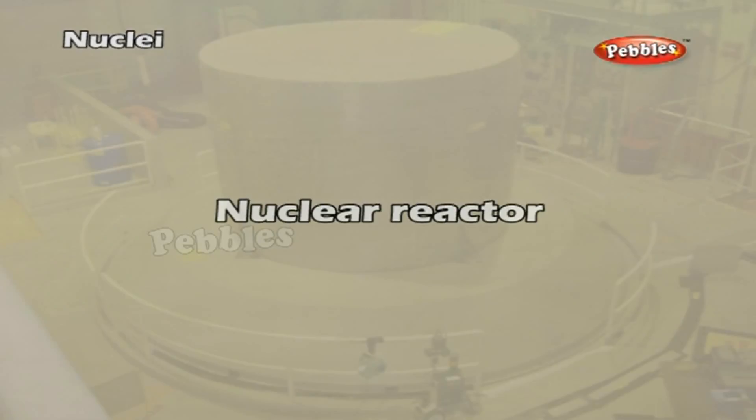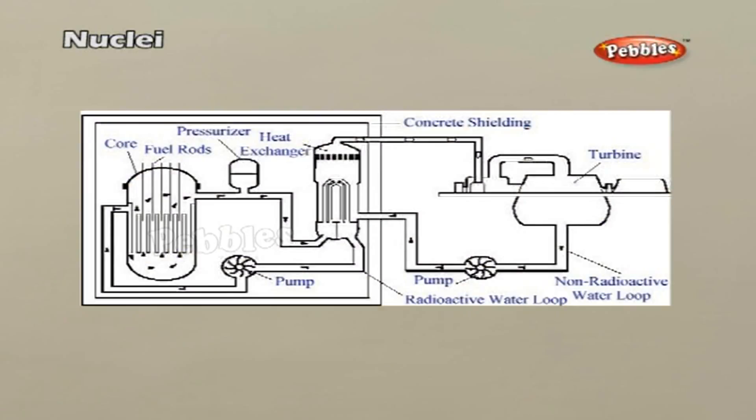Nuclear reactor. The device giving large amount of energy through fission process at a control rate is called a nuclear reactor. A model nuclear reactor is shown in the figure. A nuclear reactor mainly consists of fuel, moderator, control rods, radiation shielding and coolant.